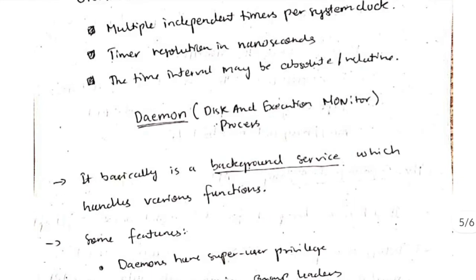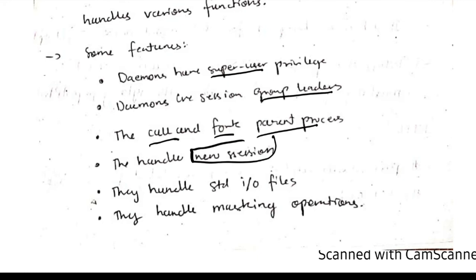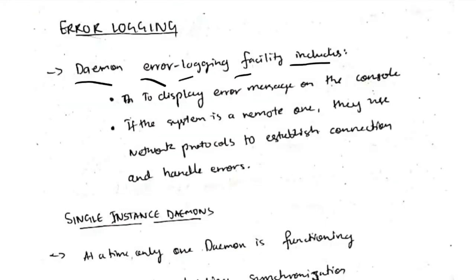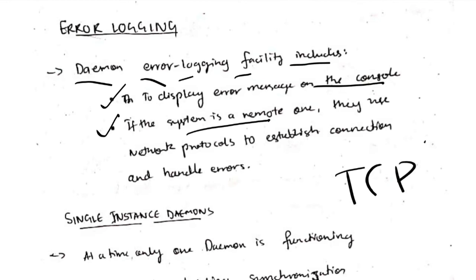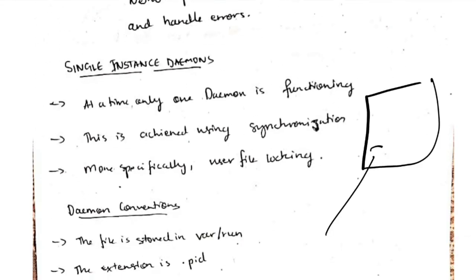The next topic is the daemon process, which stands for disk and execution monitor. It is basically a background service for handling various functions. Some of its features include super user privilege, group leader status, the ability to fork a parent process, handle new sessions, IO files, and masking operations. The daemon error logging facility can display error messages on the console, and if the system is remote, the TCP/IP protocol can be used to access that system and show error messages on its console. Importantly, at any given time only one daemon can function, and user file locking is used to achieve synchronization.